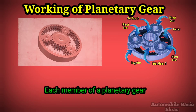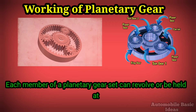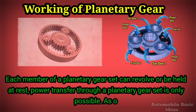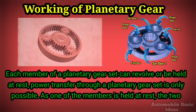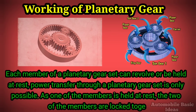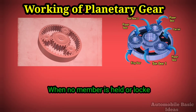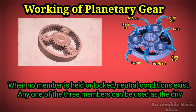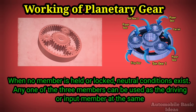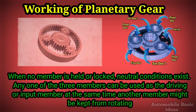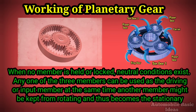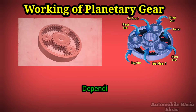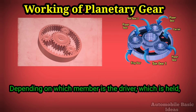Working of planetary gear. Each member of a planetary gear set can revolve or be held at rest. Power transfer through a planetary gear set is only possible when one of the members is held at rest, or two members are locked together. When no member is held or locked, neutral conditions exist. Any one of the three members can be used as the driving or input member, while another might be kept from rotating, becoming the stationary member.